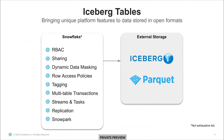Iceberg tables managed in Snowflake are fast, but beyond performance benefits, there are a lot of platform capabilities Snowflake brings to open formats. Iceberg tables will offer the full set of Snowflake features, including data masking and row access policies, tagging, multi-table transactions, streams and tasks, cloning, sharing, role-based access control, replication, automatic data loading, and programmability with Snowpark and external functions.